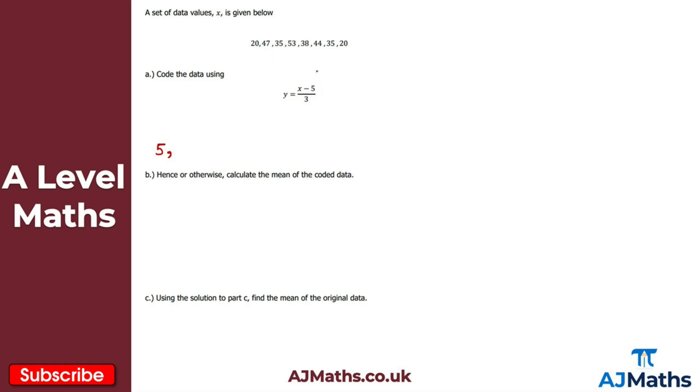Clearly I just need to repeat that for each individual data value. So 47 minus 5 is 42, divide that by 3 and you'd get 14. I'll just give the full data set that you should get for the coded data set.